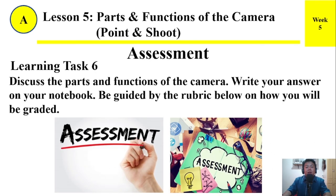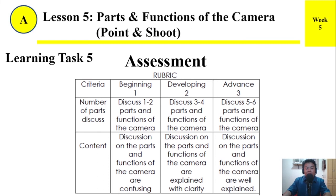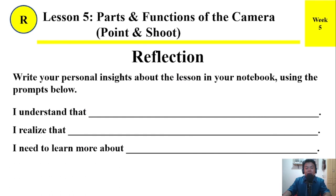For our assessment, discuss the parts and functions of a camera. Write your answer in your notebook and be guided by the rubric below on how you will be graded. The rubric has criteria with beginning, developing, and advanced levels, scored by the number of parts discussed and content quality. For our reflection, write your personal insights about the lesson using these prompts: I understand that ___. I realize that ___. And I need to learn more about ___.